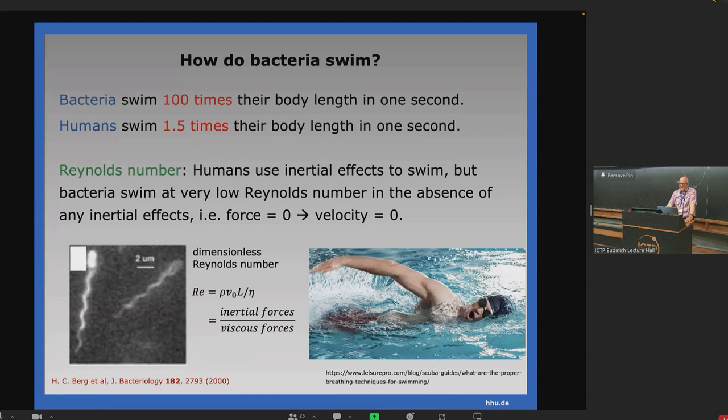If you look how bacteria swim, they swim 100 times their body length in one second, while a human only swims 1.5 times your body length in one second if you are a good swimmer. So bacteria manage to swim very quickly. The technique of swimming is completely different. Humans do one breast stroke and then are gliding. It's inertia which drives you forward. This doesn't work for bacteria. They swim at low Reynolds number and need another technique.